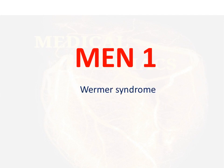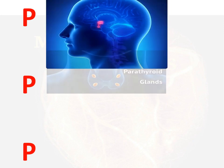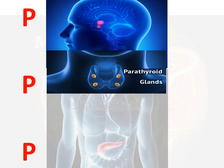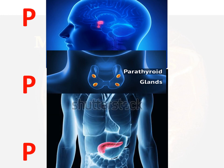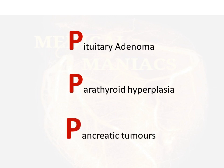MEN1 syndrome, also known as Wermer's syndrome, has three components which all start with the letter P. The organs of interest are the pituitary gland in the head, parathyroid in the neck, and pancreas in the abdomen. The three Ps stand for pituitary adenoma, parathyroid hyperplasia, and pancreatic tumors.